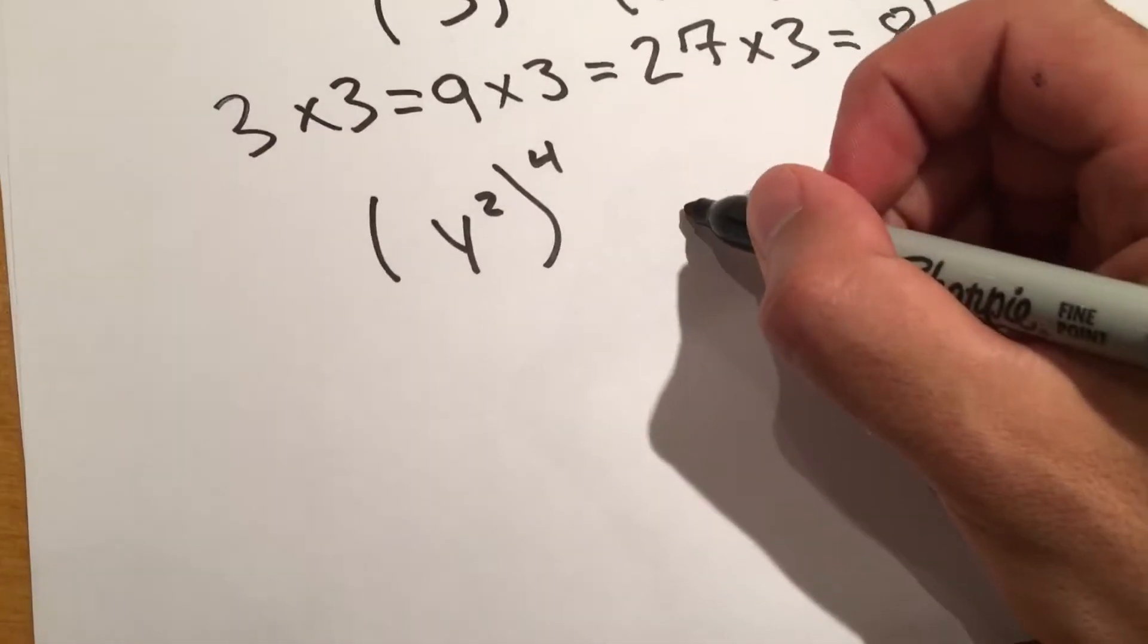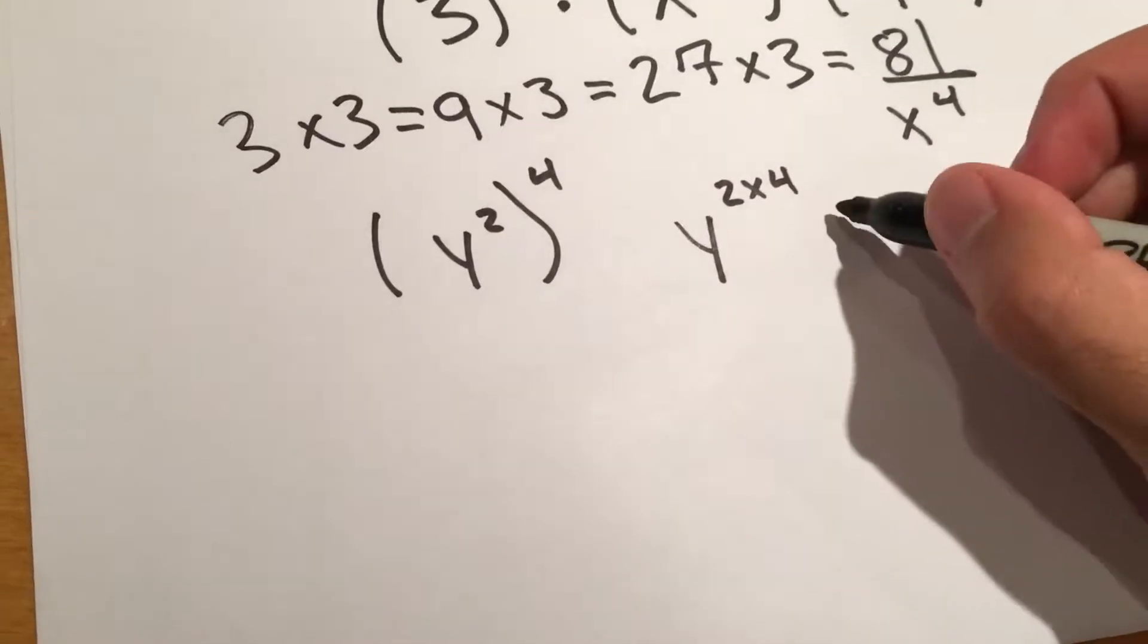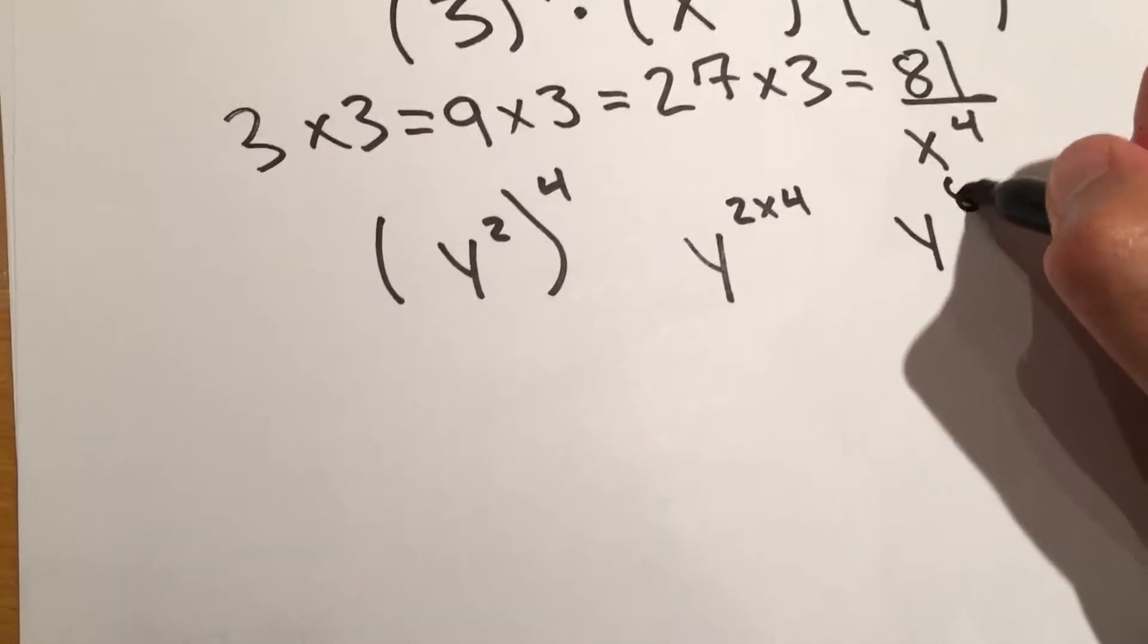So it's just going to be y to the 2 times 4, which is y to the 8th power.